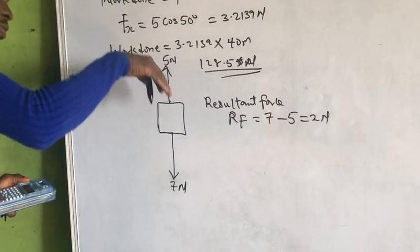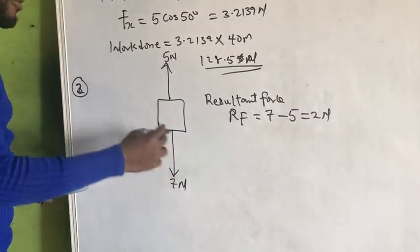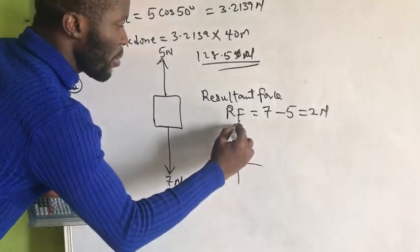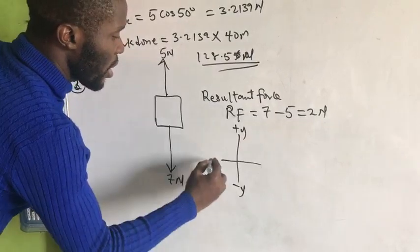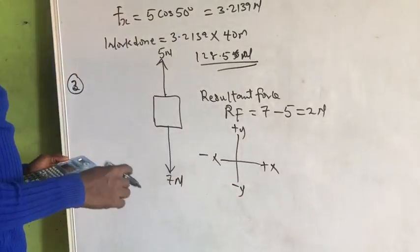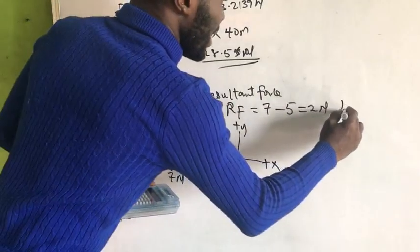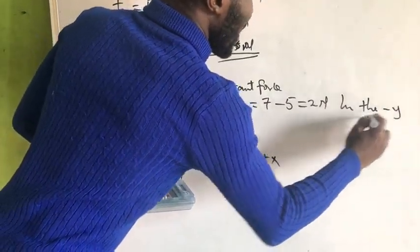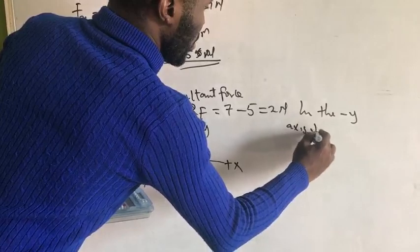In what direction? In the direction of the 7 newton force. And, the 7 newton force is actually, if this is a plus y, minus y, minus x, plus x. The 7 newton force is a reward in the minus y axis direction.